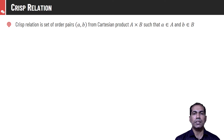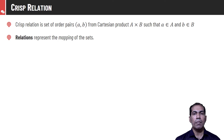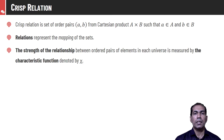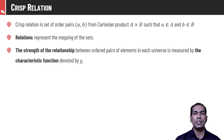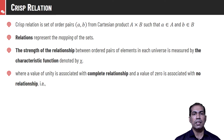Relations are derived from this Cartesian product based on certain conditions. Those tuples in the Cartesian product which satisfy certain conditions will be part of the relation, the rest will not. Ultimately, we can say that a relation defines some kind of mapping between two sets — it tells us how element a is connected with element b. Each tuple in this relation has a certain membership value which is known as the strength of relation, and the strength of relation for a crisp set is represented by the characteristic function chi.